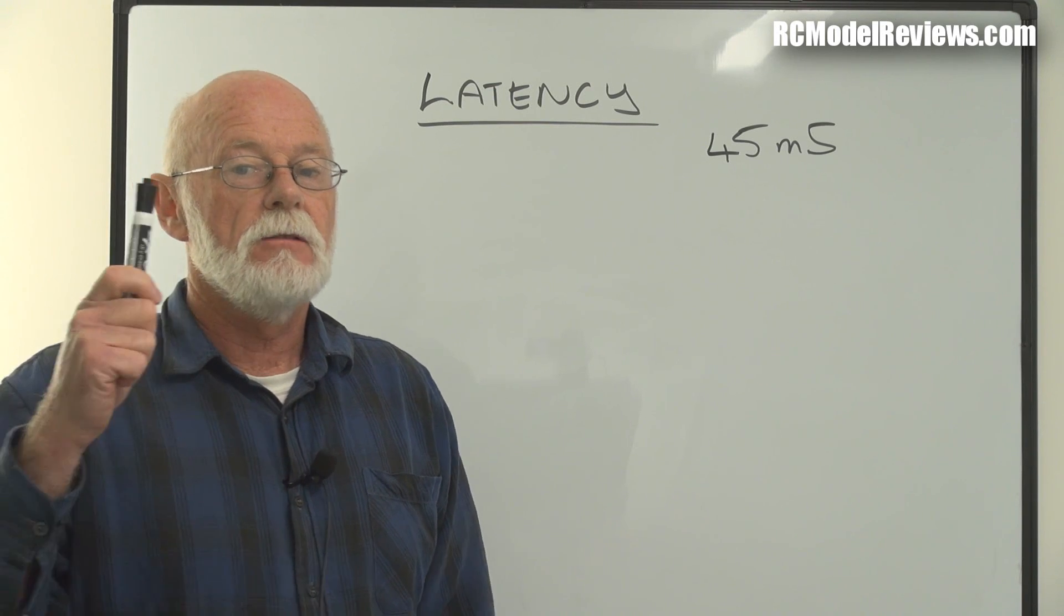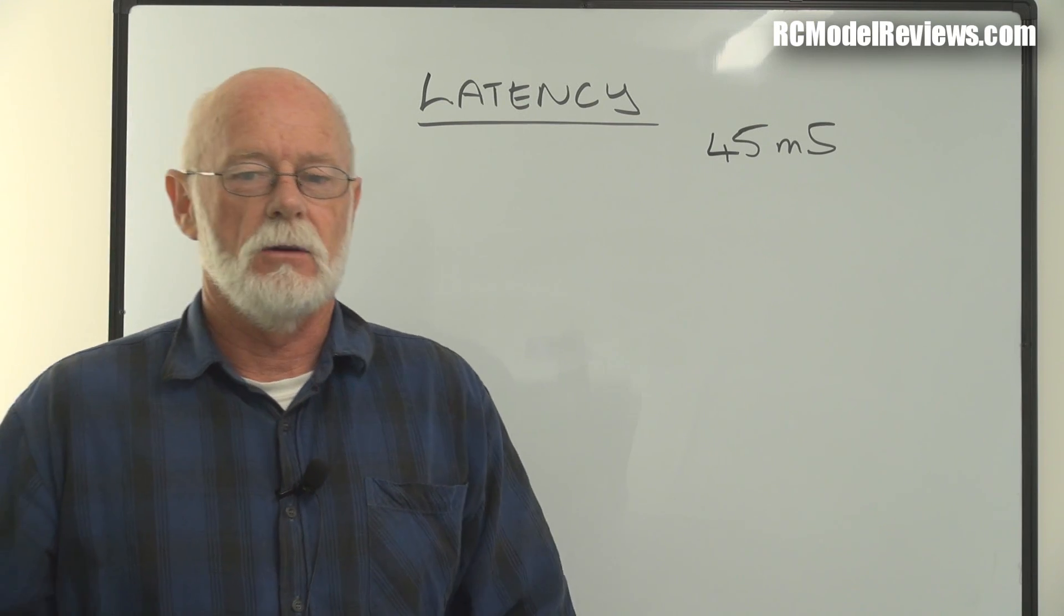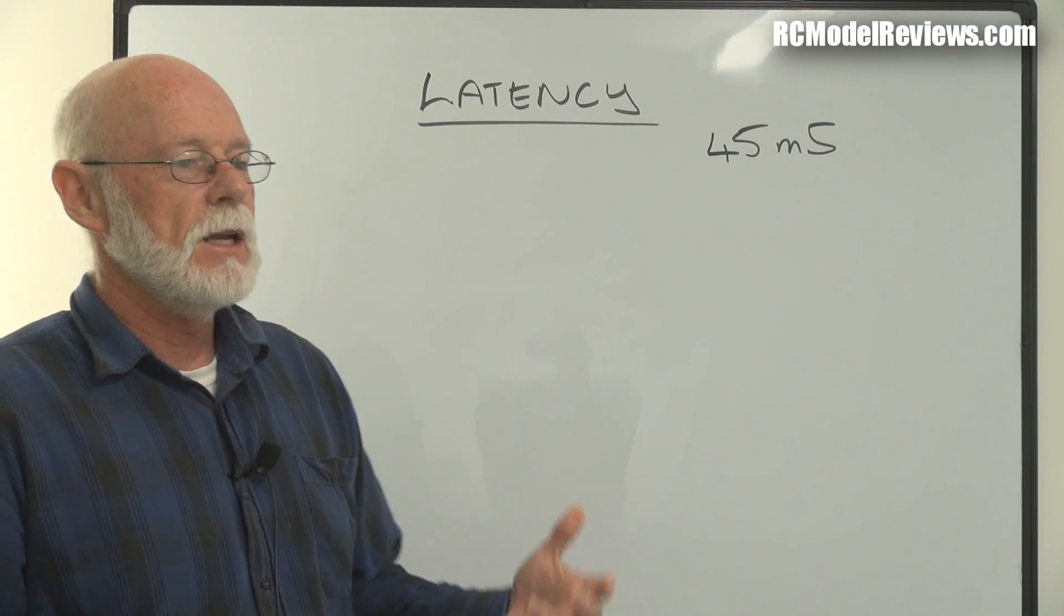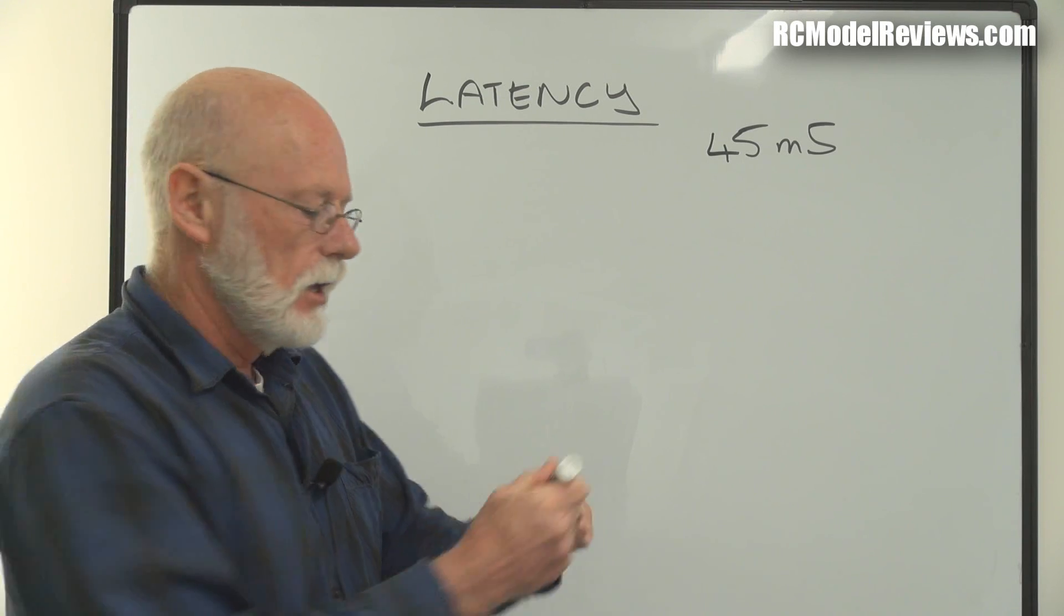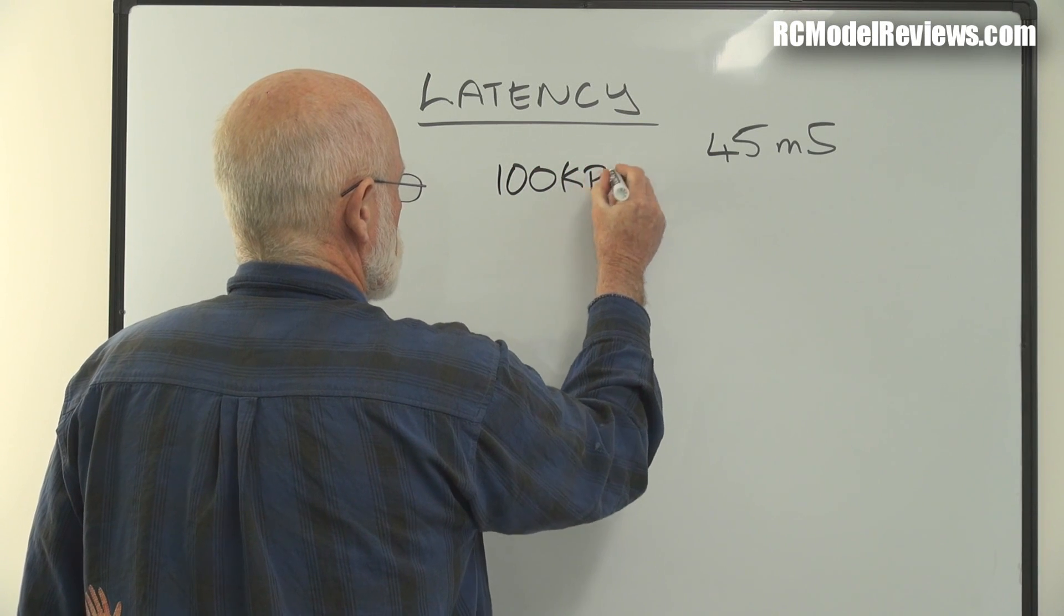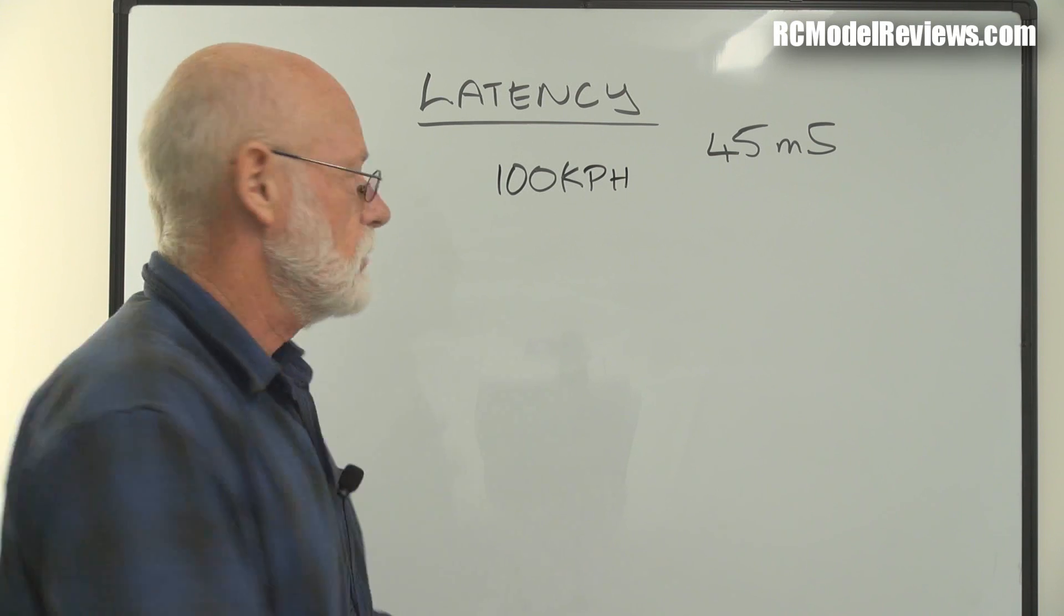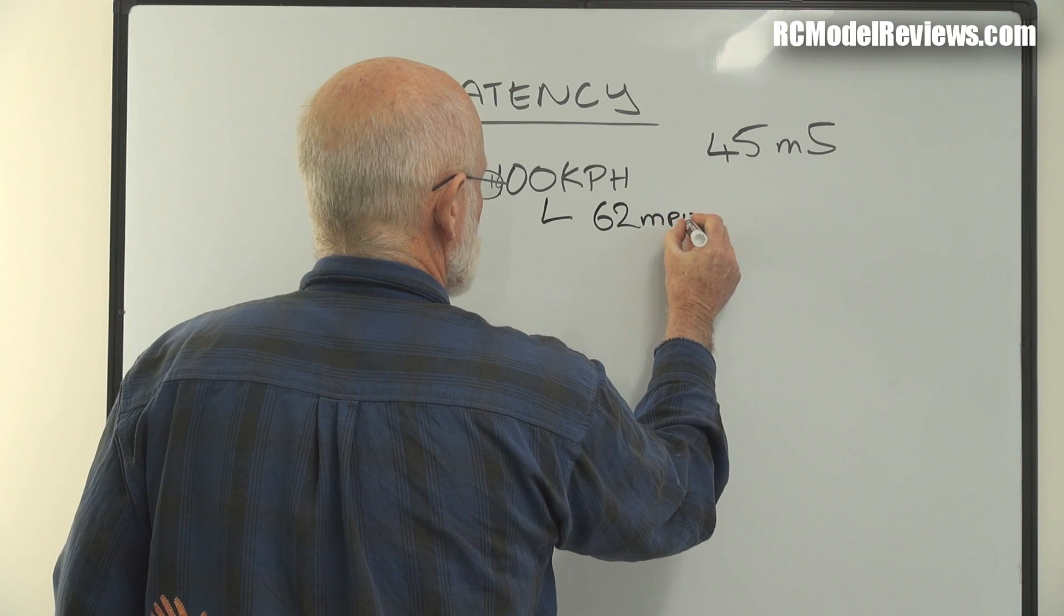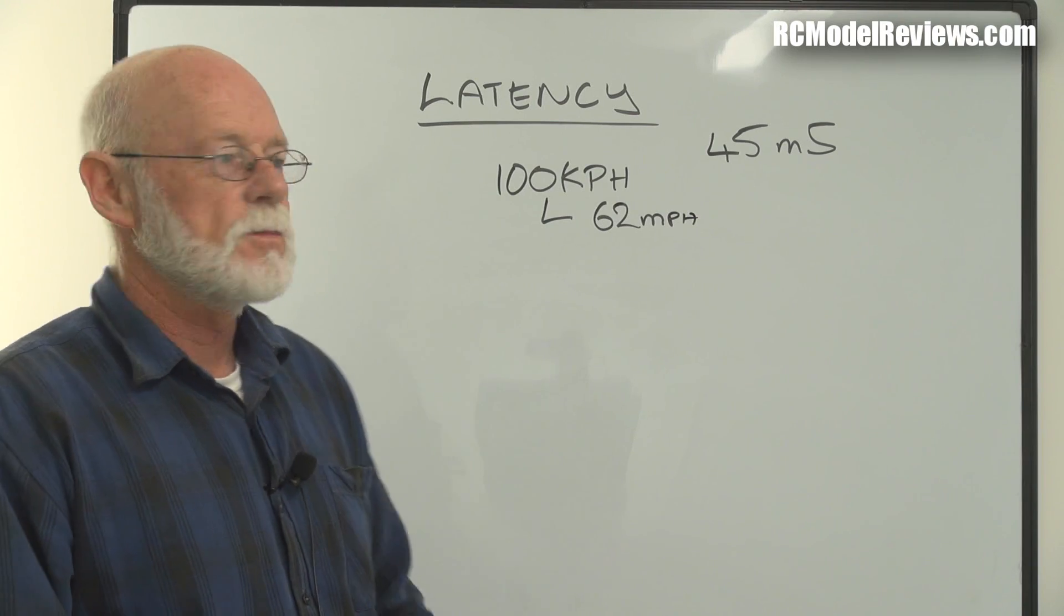I'm going to talk about the distances. We're going to quantify what 45 milliseconds of latency means to somebody flying a model. I'm going to look at mini quads. An average mini quad that you might buy off the shelf is probably going to have a speed of around about 100 kilometers an hour. That's 100,000 meters per hour. In old money, if you live in America, it's about 62 miles per hour.